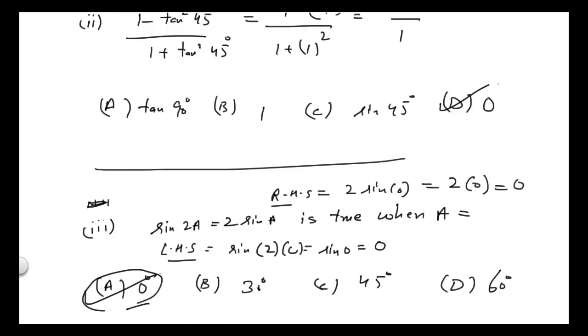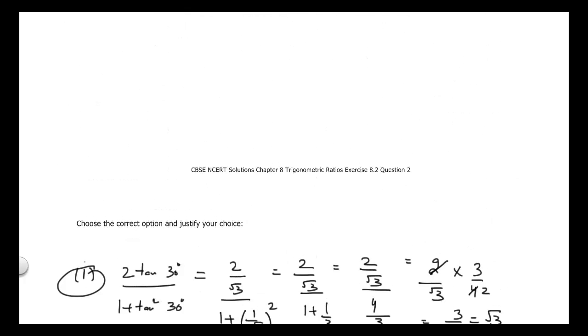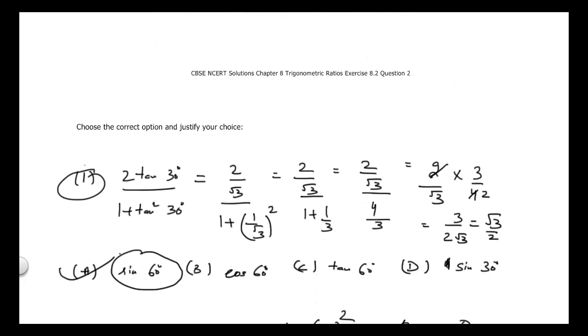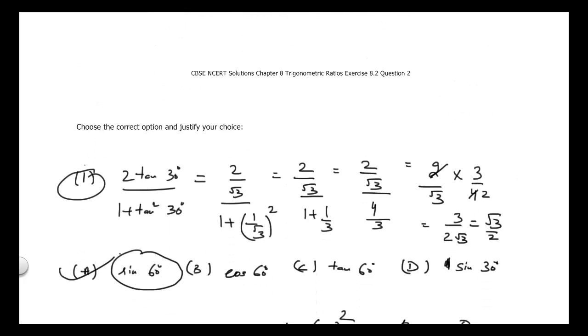That's all for CBSC NCR Solutions Chapter 8, Trigonometric Ratios, Exercise 8.2, Question 2. In the next part I will be covering Question 3. See you guys in the next video.